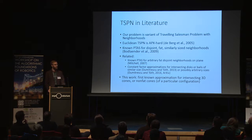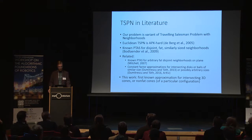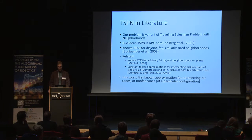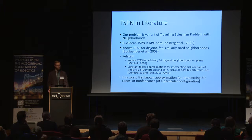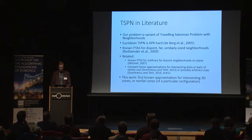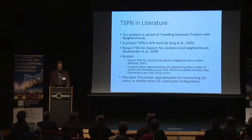However, the requirement that the cones be disjoint is incredibly limiting in practice, because ideally we would like to be able to fly up high and image a lot of objects at once. There are related problems with known PTAS for arbitrary fat disjoint neighborhoods in a plane, but that requires they are on a plane, which we don't have. There are also constant factor approximations for intersecting disks or balls of similar size — and even arbitrary size on the plane, which is a recent arXiv result. This work is the first known approximation for intersecting 3D cones and also the first for non-fat cones of this configuration.